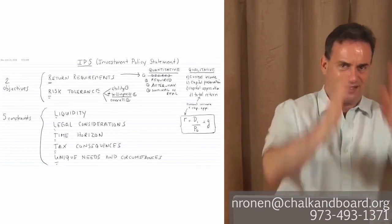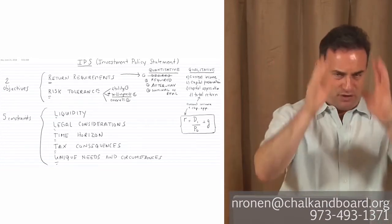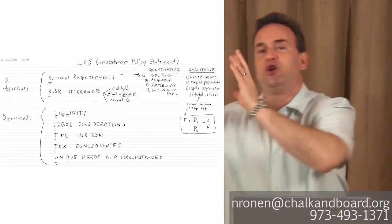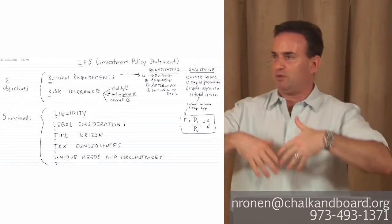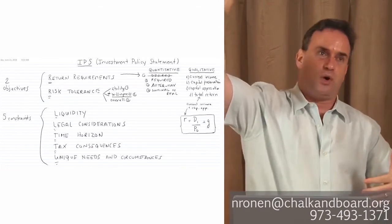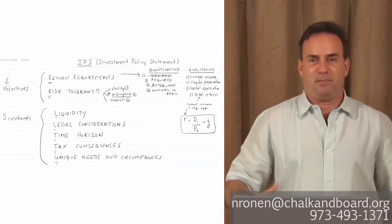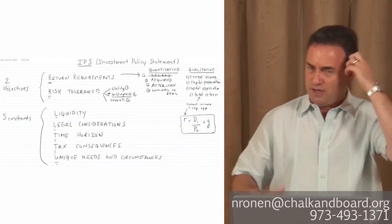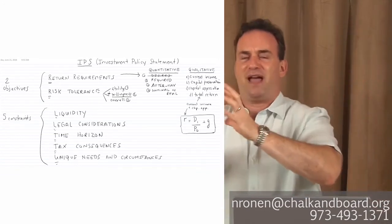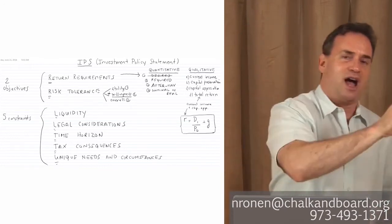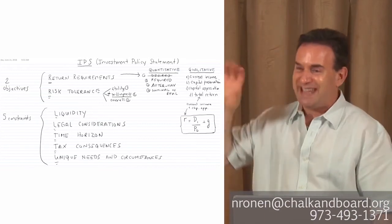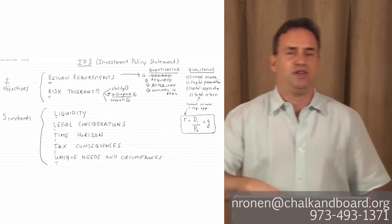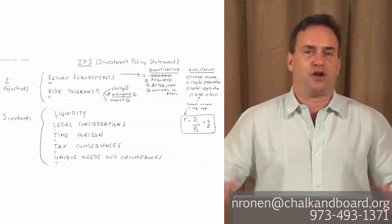First, we develop the IPS. That's step number one. Once the IPS is created based on the objectives and constraints of the clients, then we include the capital market expectations of the portfolio manager in terms of what he expects the environment to be. Does he expect interest rates to go up or down, inflation to go up or down? How is that gonna impact the expected returns on specific asset classes or between asset classes and the variance, standard deviation, and correlation?